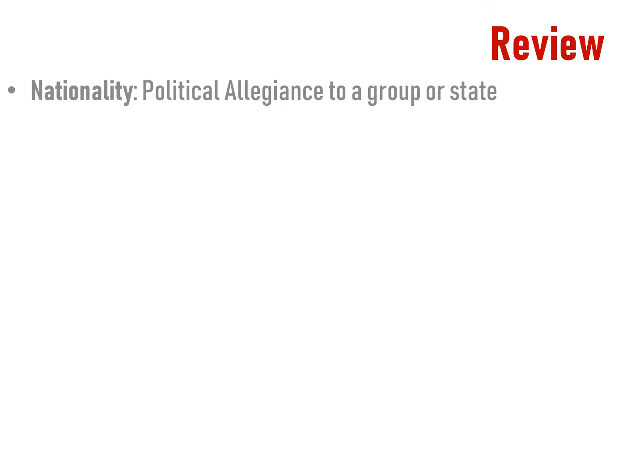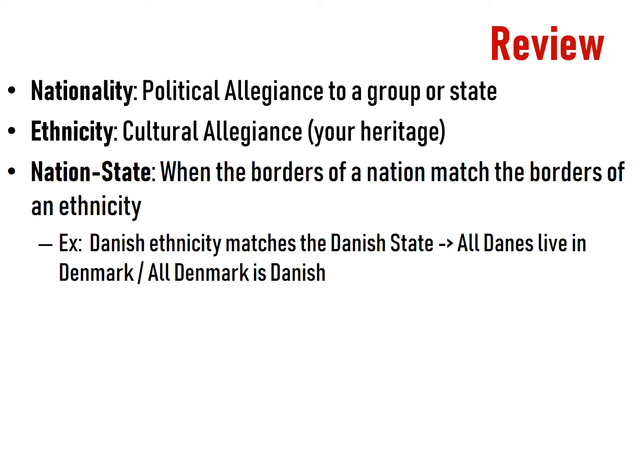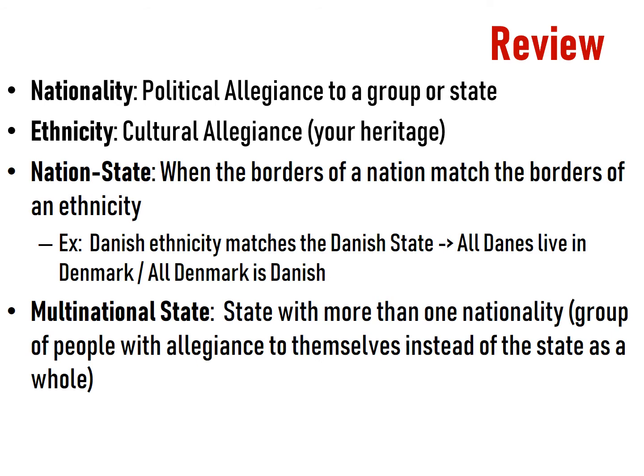Quick review. Nationality is political allegiance to a group or state. Ethnicity is your cultural allegiance. A nation-state is when your borders match your ethnicity — that means 90% of people or more in your country are of the same nationality or ethnicity. An example is Denmark, where everyone's a Dane. And then you have multinational states, where you have more than one nationality — a group of people have an allegiance to themselves instead of the state as a whole. Think of the UK, because when you ask someone from the UK who they are, they don't say they're a UKer. They say they're Irish, Scottish, English, or Welsh.